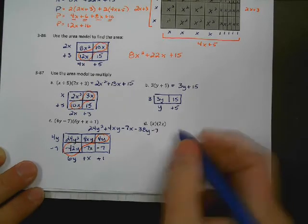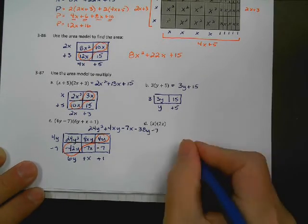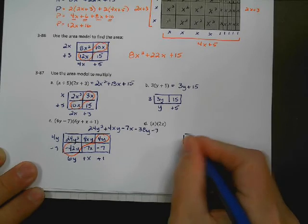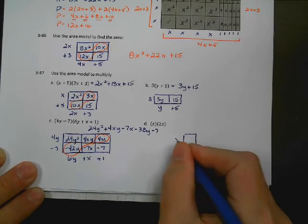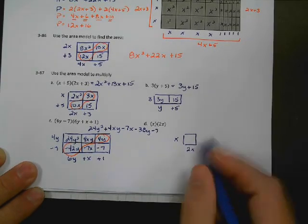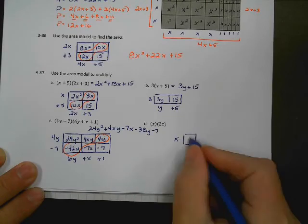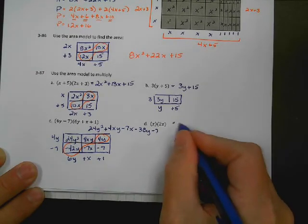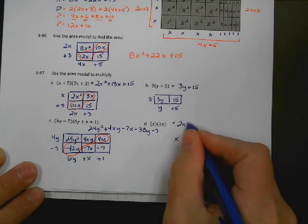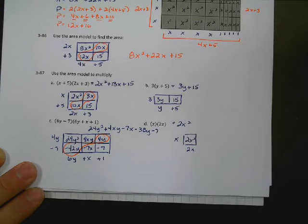What if I have a 1-by-1? Well, that's just a square. X times 2X is 2X squared. There's my answer.